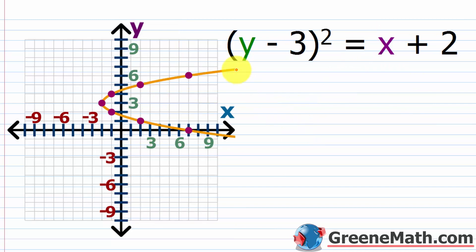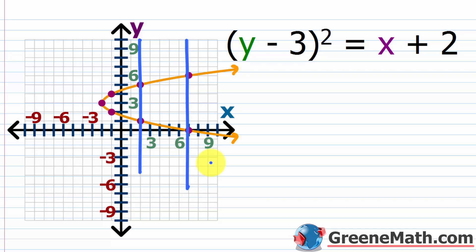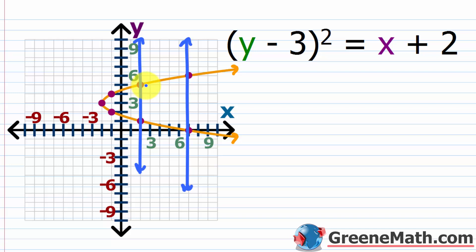Let's look at another example where we don't have a function: a sideways parabola given by (y minus 3) squared equals x plus 2. If I draw vertical lines, they will impact this graph in more than one location. An x value of 7 is associated with a y value of 0 and also a y value of positive 6. An x value of 2 is associated with y values of 1 and 5. This violates the definition of a function, so this is not a function.